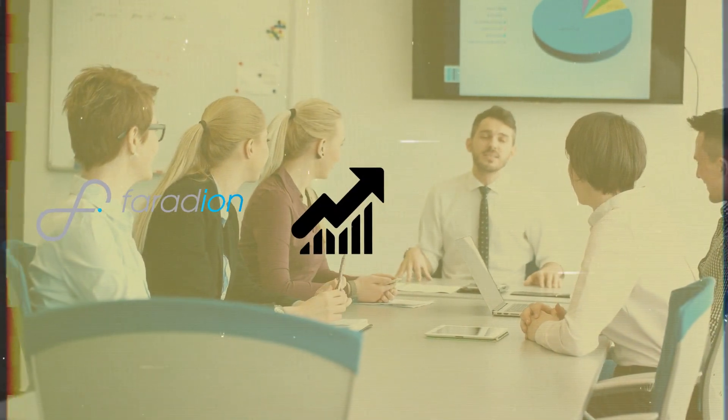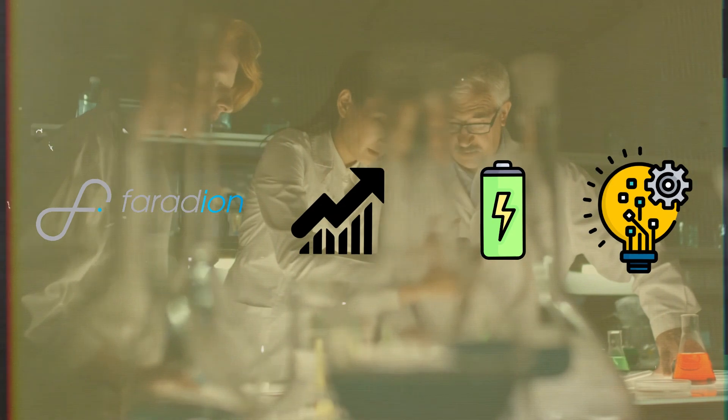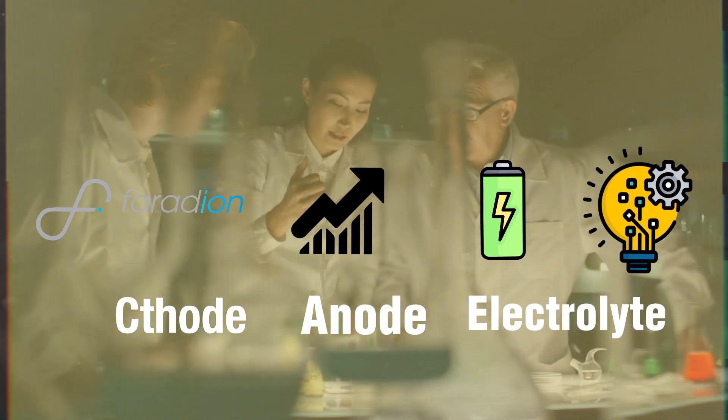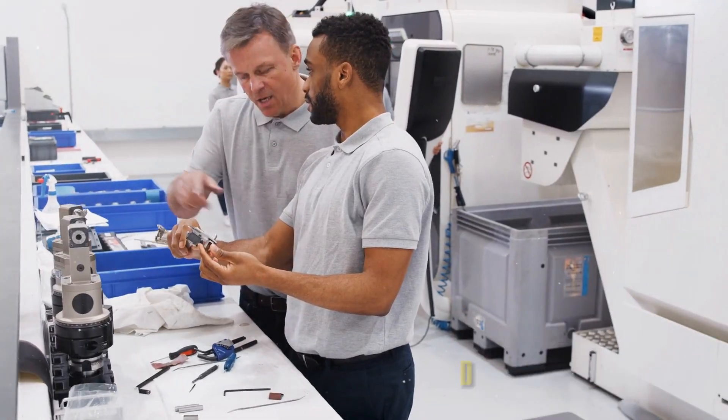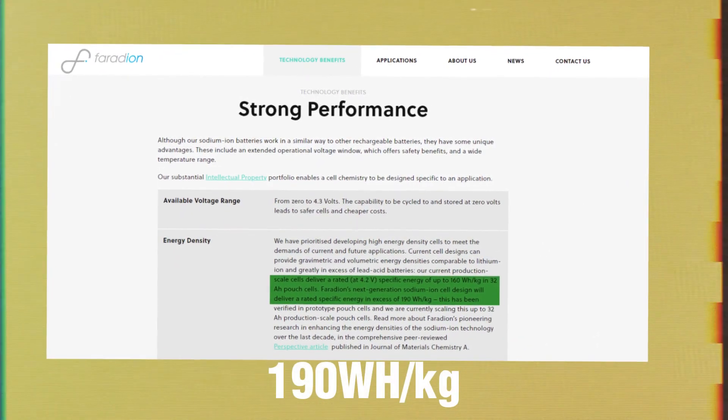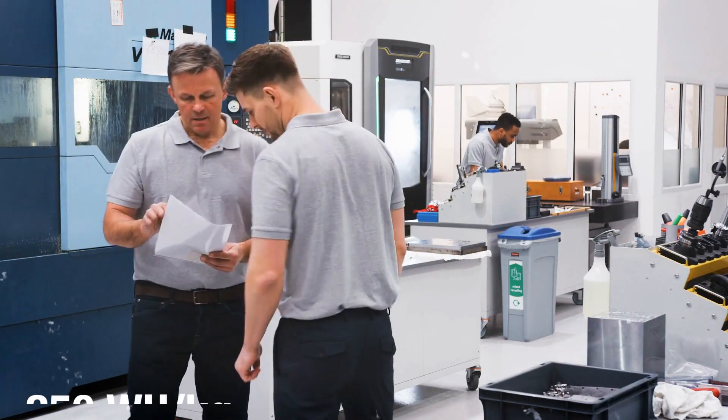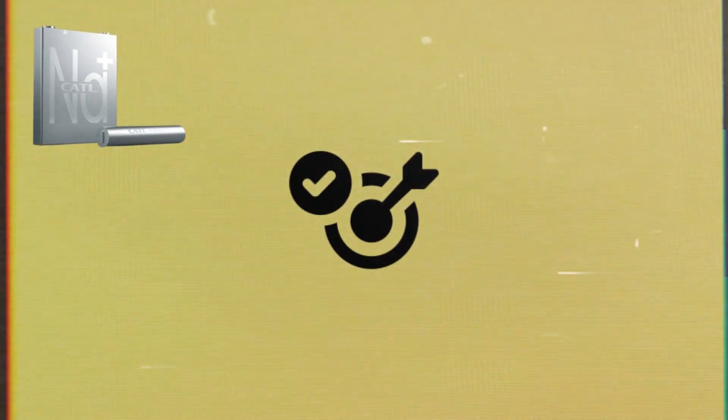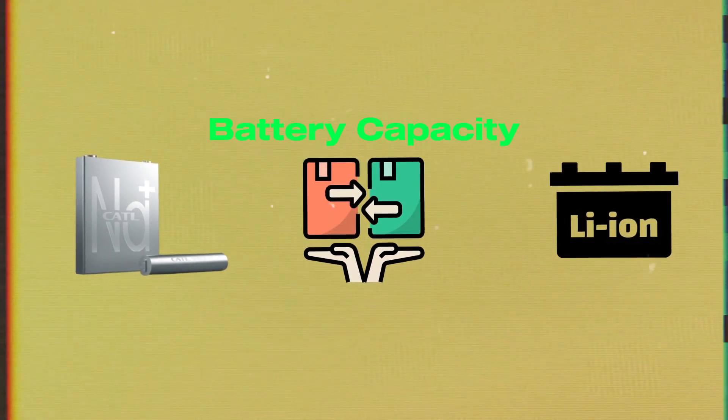Faradion has already made huge progress in achieving energy density through innovations in the cathode, anode, and electrolyte. Using the changes incorporated in the materials outlined, it was able to increase the overall capacity of up to 190 WHKG. Efforts are underway to increase the capacity of up to 250 WHKG. If the sodium-ion batteries are able to reach this threshold, then they will be almost comparable to lithium-ion batteries in terms of battery capacity.